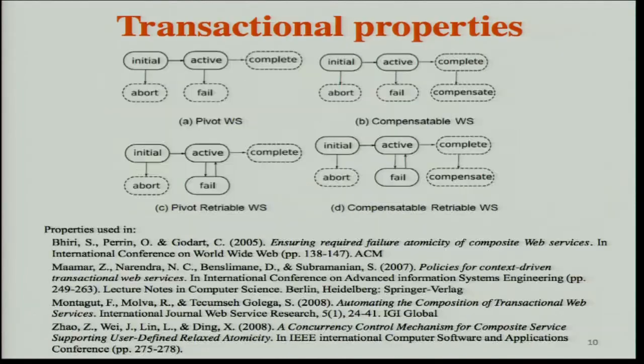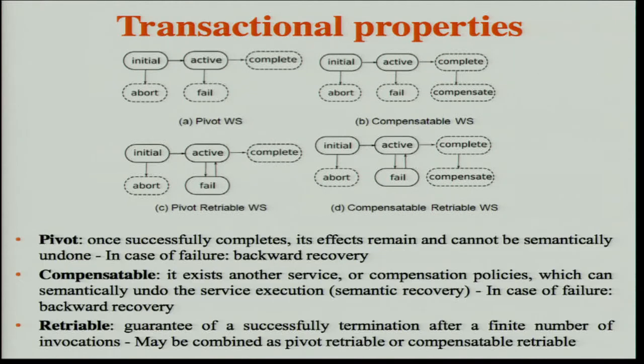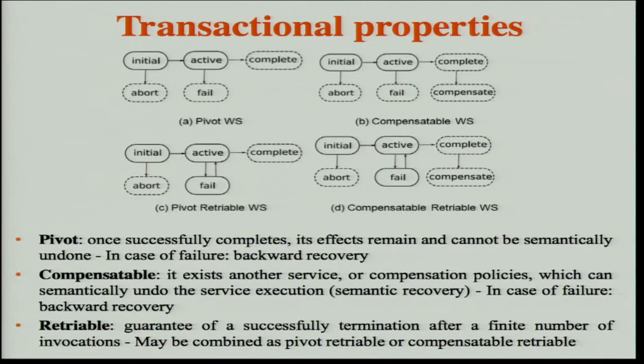To allow all these kinds of recoveries, researchers have proposed different kinds of transactional properties. I present here the main ones from the literature with some references. We have four transactional properties. The first is called pivot: a service is pivot if, once successfully completed, its effects remain forever and it cannot be semantically undone, but in case of failure it offers mechanisms for backward recovery. For example, a service providing a non-exchangeable and non-cancellable flight ticket can be pivot.